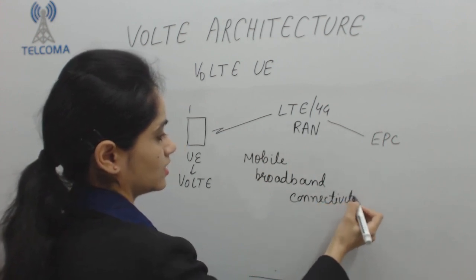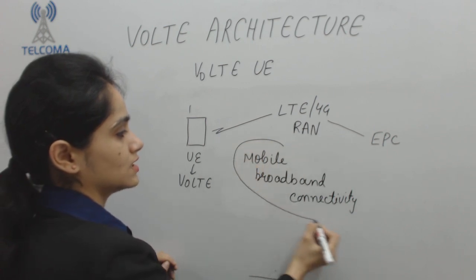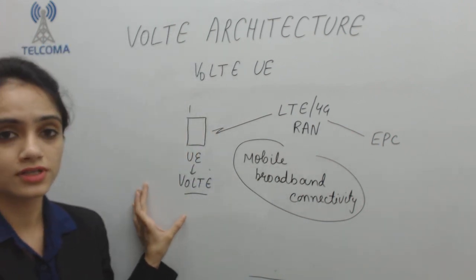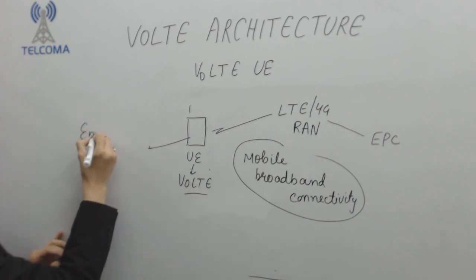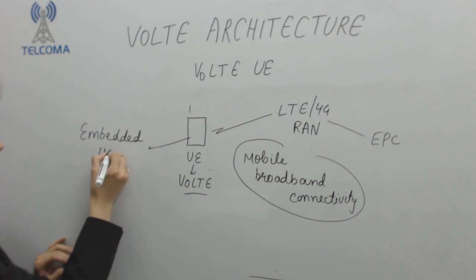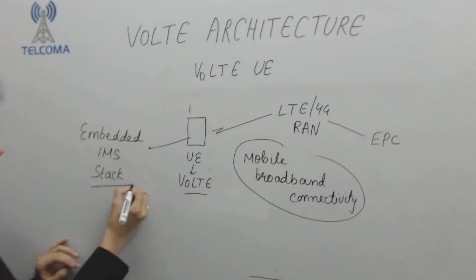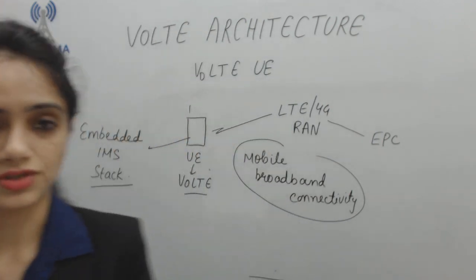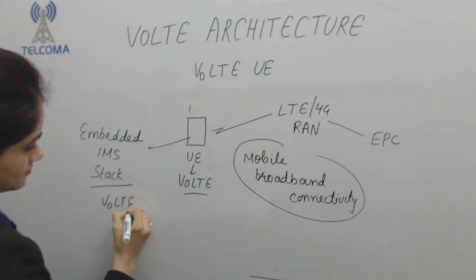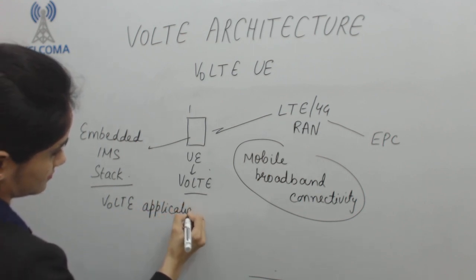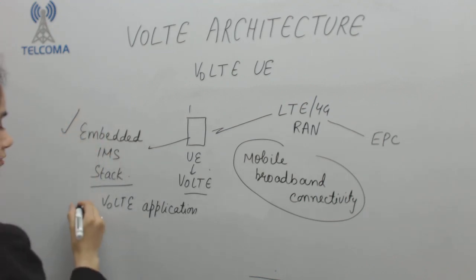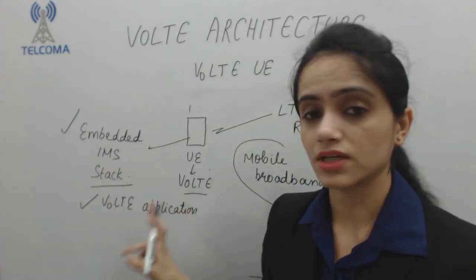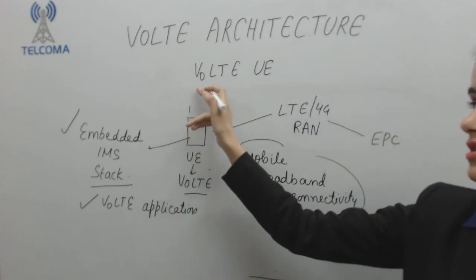This mobile broadband connectivity is available when the VoLTE-enabled UE can attach to the RAN and the EPC. Within this VoLTE User Equipment, there is also a requirement for an embedded IMS stack and VoLTE applications. With the help of these two components, the UE can access the VoLTE network.